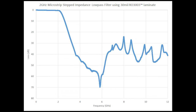A good example would be systems using 3.6 gigahertz — this would be a really good filter to allow energy through up to two gigahertz and then block energy at 3.6 gigahertz. Roughly speaking, at 3.6 gigahertz you can see on the chart there's about 40 dB of loss, so the filter really is not going to allow much energy to pass through.